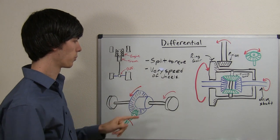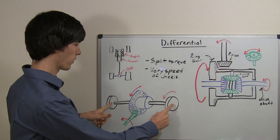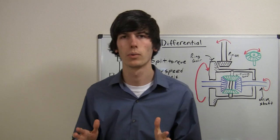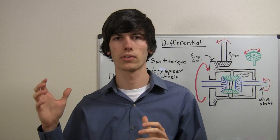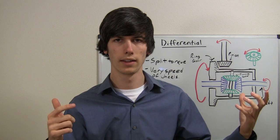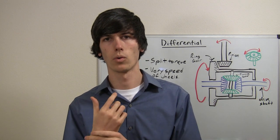And it's also allowing the speeds of the wheels to be different. Now why would you want the speeds of the wheels to be different? Well, when you're going around the corner, the outside tire is going to travel farther than the inside tire. So when that happens,